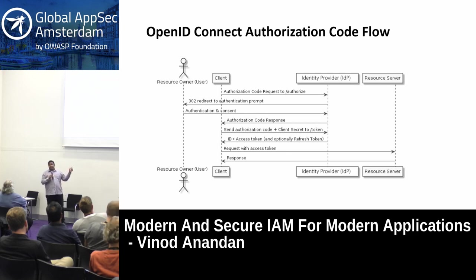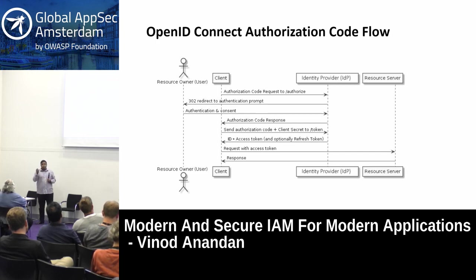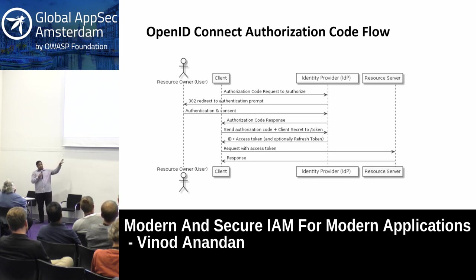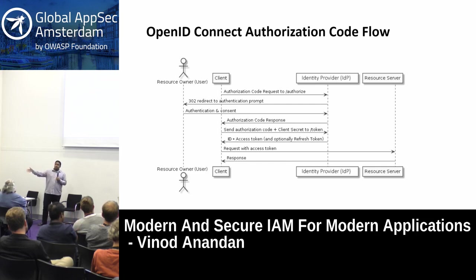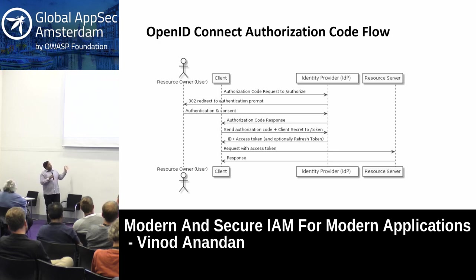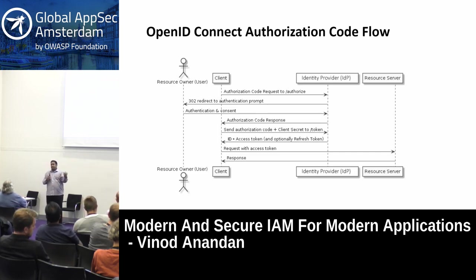The user then gets redirected back with an authorization code. Gmail or Google Drive uses that authorization code along with its own client secret — this flow is used for clients that can securely keep a secret. It uses its secret to identify itself as a client and sends the authorization code in a back-channel request to accounts.google.com. Then accounts.google.com provides an ID token, an access token, and optionally a refresh token if needed. Gmail can then use those tokens to get more data from other internal Google APIs.